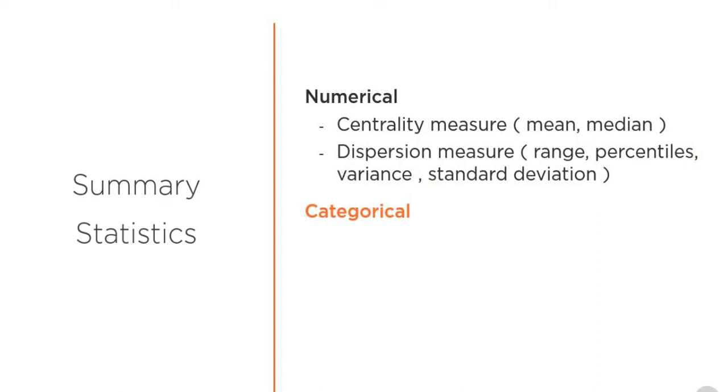For categorical features where you have categories, you cannot directly calculate centrality and dispersion measures. But you can use other metrics such as total count. You can also find out how many unique values are there in that categorical feature. You may also want to look into the category-wise breakup such as per category count and proportions.